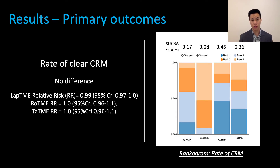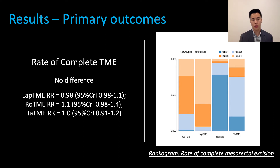Moving on to our results, there were no statistical differences in the rates of clear circumferential resection margin across all four surgical techniques. The best intervention, robotic surgery, only had a 46% probability or a SUCRA score of 0.46 of being ranked number one. Similarly, compared to open surgery, there were no differences in rates of complete total mesorectal excision across all minimally invasive surgeries.